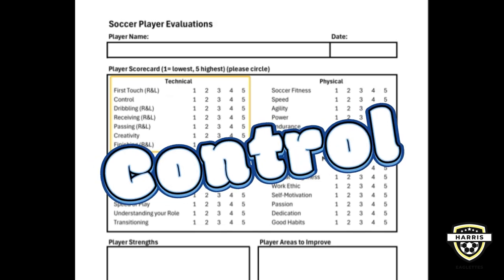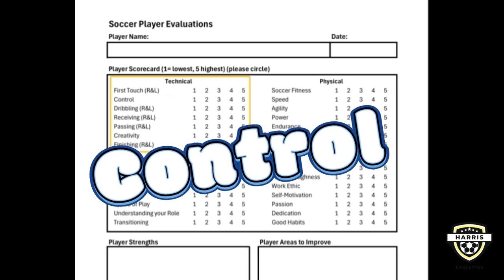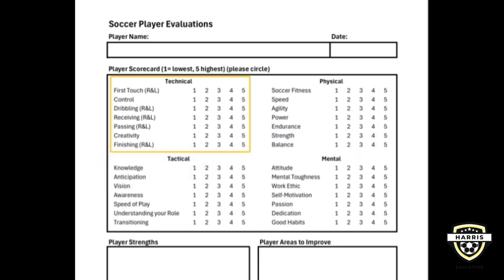The next skill is control. Control is about getting the ball with precision and keeping it close to you as you move up and down the field. Good control means you can dribble past defenders, make accurate passes, and maintain possession even while under pressure. It's essential for smooth play and can be improved through drills and consistent practice.